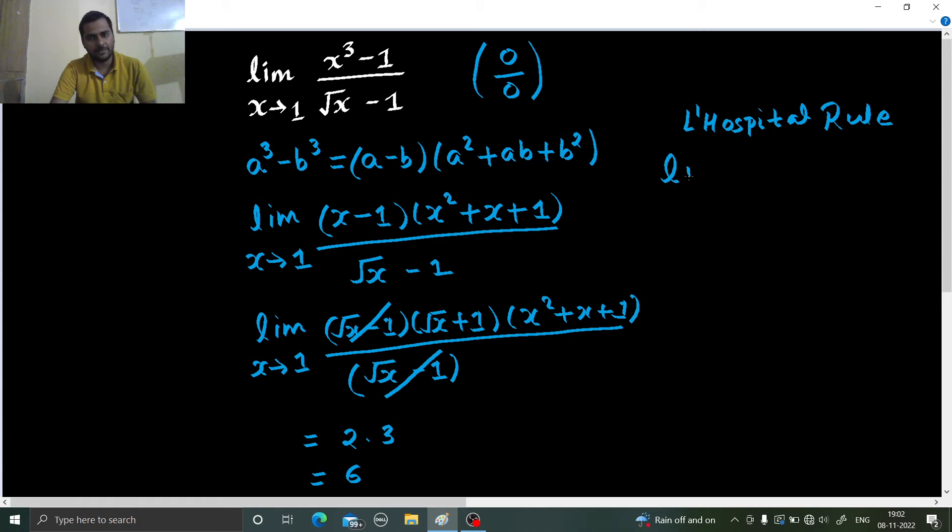In that we differentiate because it is a 0 by 0 form. We differentiate the numerator and denominator separately. Derivative of x cube is 3x square, derivative of minus 1 is 0. Root x derivative is 1 upon 2 root x, derivative of minus 1 is again 0.